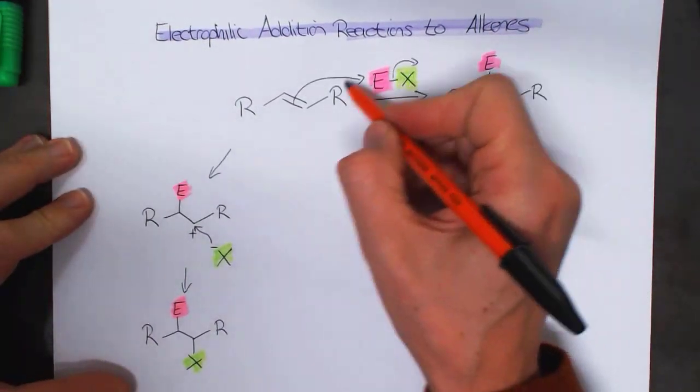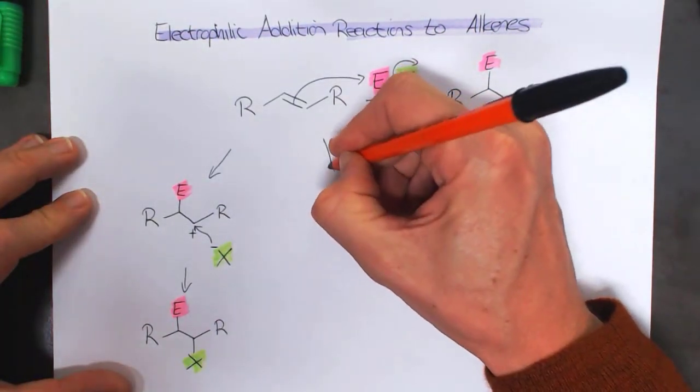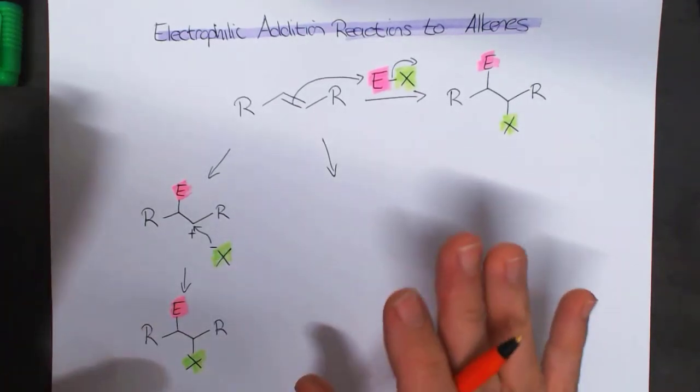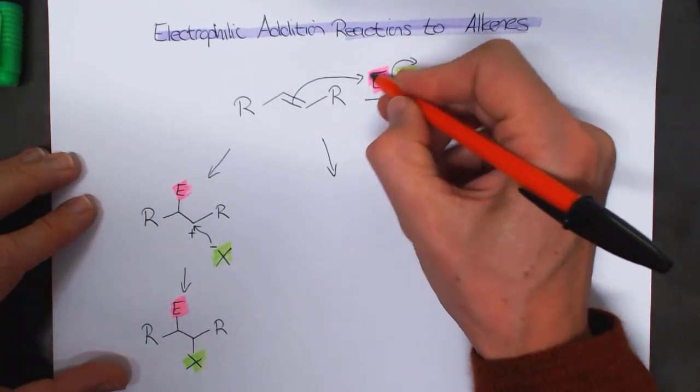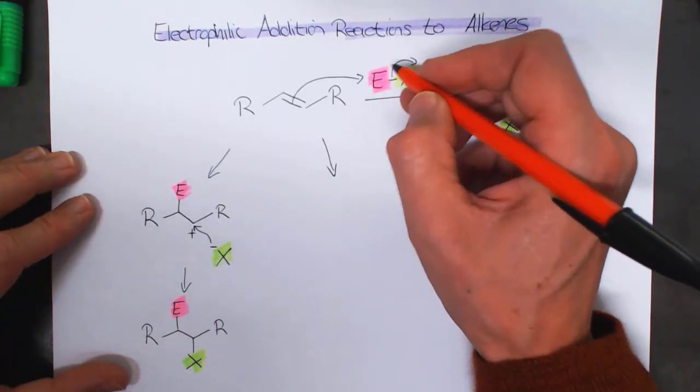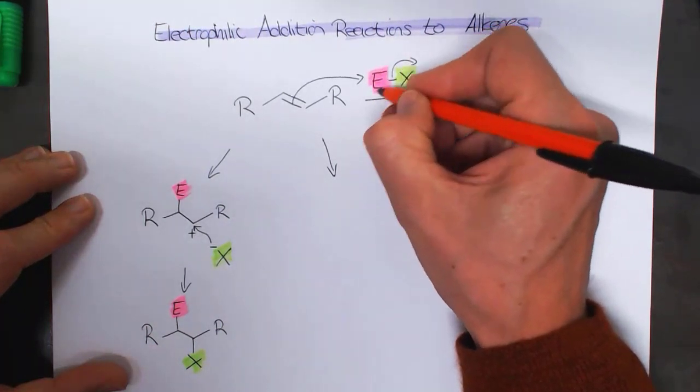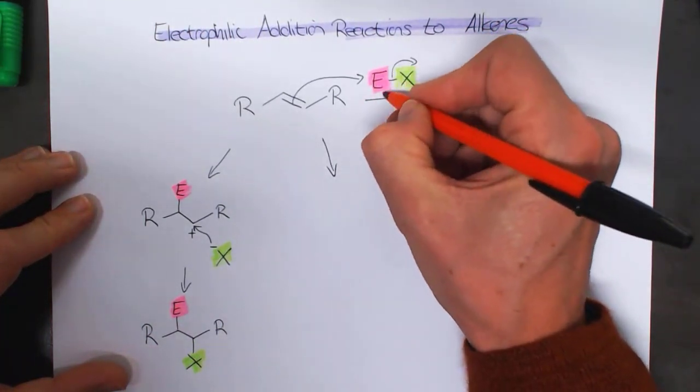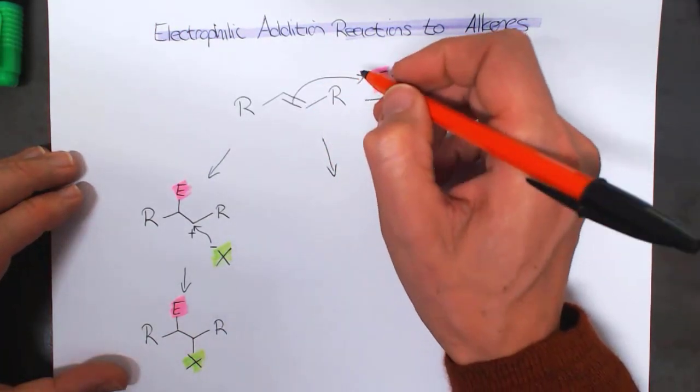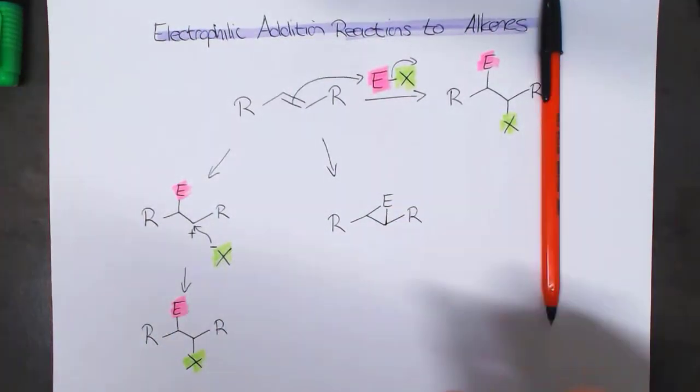The other thing that this could do, depending on what this E is, is that this first step that I've shown you here still happens. But something kind of weird happens. When this electrophile is actually a little bit larger than this example here, the electrophile that's over here doesn't end up on just one of the carbon atoms, but it ends up over both. It makes a three-membered ring. So the intermediate looks like this.